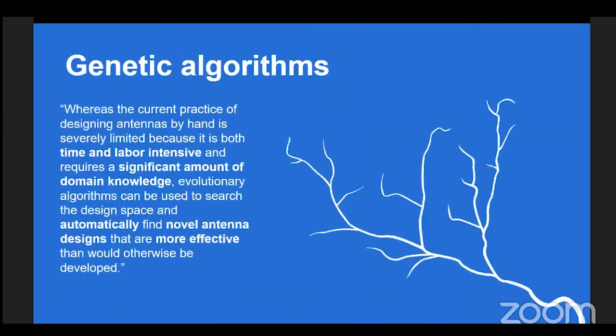That's the first algorithm I'm going to throw at this experiment. It's essentially a random shaking and allowing it to settle in a happier position. The second algorithm, I think we all have a bit of intuition for. It's called the genetic algorithm. I wanted to read to you this quote by NASA. Whereas the current practice of designing antennas by hand is severely limited because it is both time and labor intensive and requires a significant amount of domain knowledge, evolutionary algorithms can be used to search the design space automatically and automatically find novel antenna designs that are more effective than would otherwise be developed. This is a real sales pitch here. This idea of automatically finding antenna designs that are more effective. And this word novel, it tells me that there are some configurations of antennas that we may not have thought about that are actually out there and we could access and would do well.